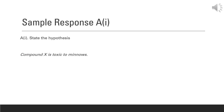Let's look at some sample responses. Note that this is not the only correct answer, but it shows how you would be expected to answer on the AP exam. Question A1 asks us to state the hypothesis. The hypothesis used here is that compound X is toxic to minnows. You could also use a null hypothesis and state that there is no connection between compound X and toxicity in minnows. Either would be accurate and acceptable.